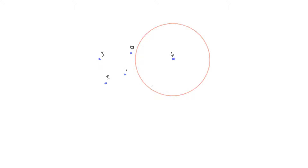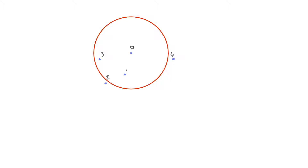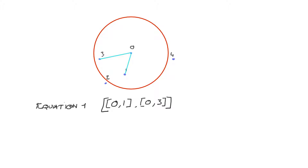We check every time which points are in range. Point four doesn't reach anything so it won't be processed. Once we have this, we can start to add all the lines connecting to that point, giving us pairs. This is the first equation we're going to build — something that creates the points which define the line segments we want. From zero to one and from zero to three are two line segments placed in the list.